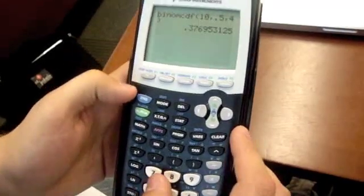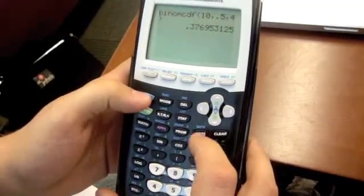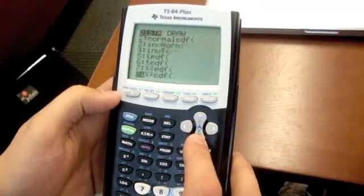Now, if you want to do the same thing for the PDF function, once again, click second, VARS. Scroll down until you reach the binom PDF.